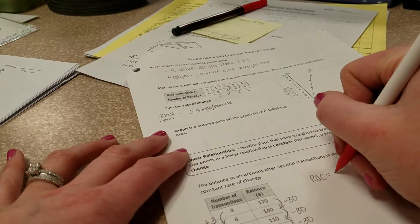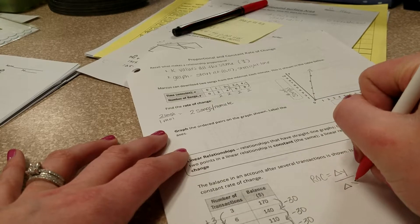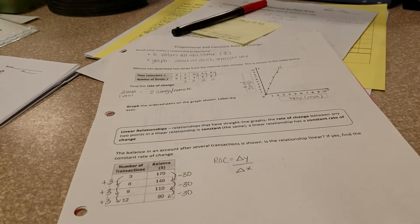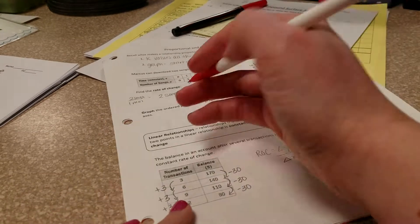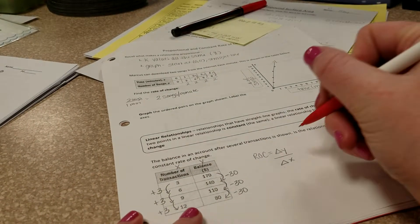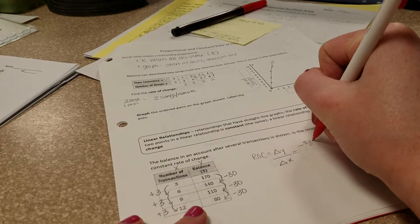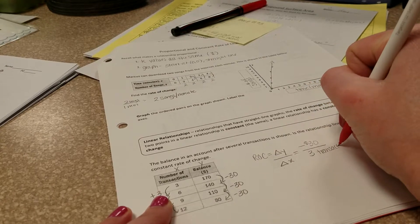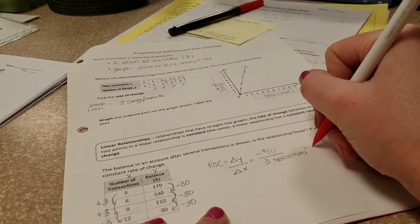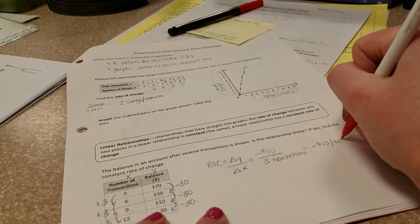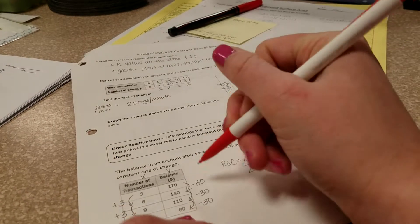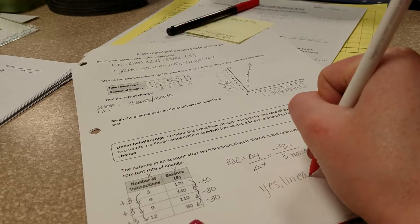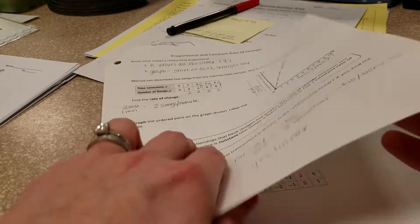So my rate of change is how the y values change over how the x values change. And remember from our proportional chapter, we actually talked about this and we used those delta symbols. They represent the change. So the changes in our graph, this would be x and that would be y. Our y change is negative $30, and our x change is 3 transactions. So what that means is if we actually go ahead and divide, we have negative $10 per transaction. Since all of those changes are the same, 3, 3, 3 and negative 3, 3, we can say that yes, this is linear, because the rate of change stays the same for all those different parts of our relationship.